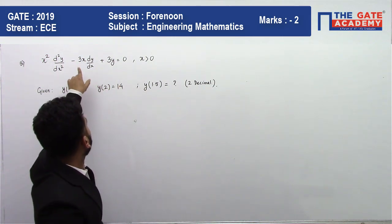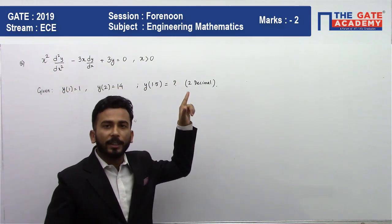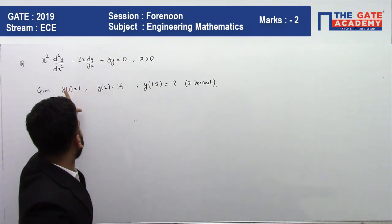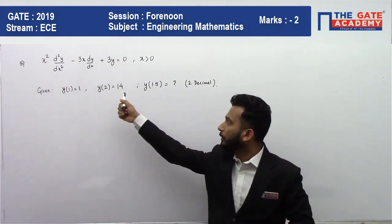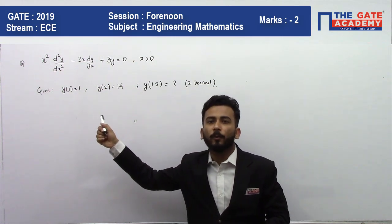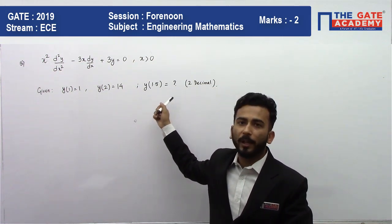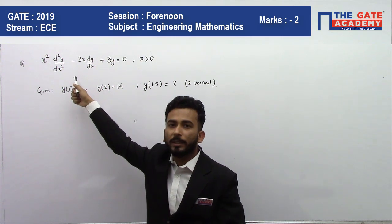As you can see, this is the differential equation that you need to solve. The conditions are given that y(1) = 1, y(2) = 14, and you are required to find the value of y(1.5).